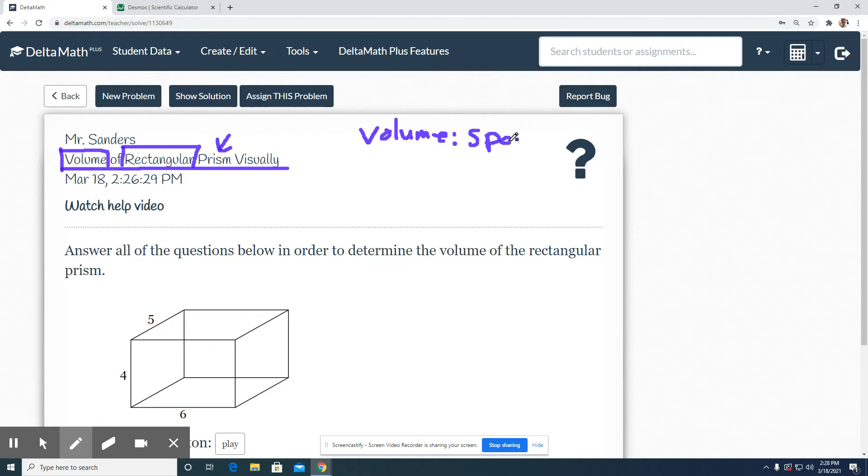Rectangular is talking about a rectangle base, so the bottom of it is a rectangle. And prism is basically like a 3D object.